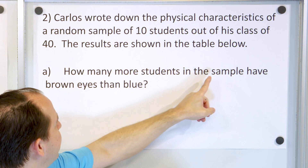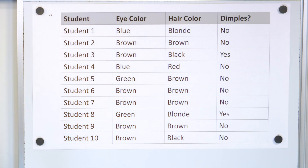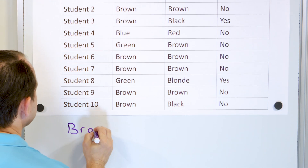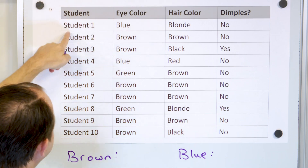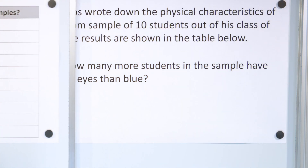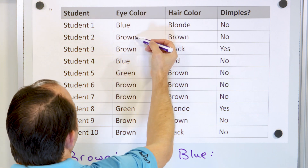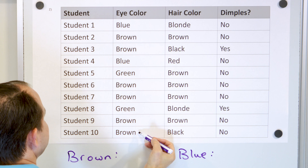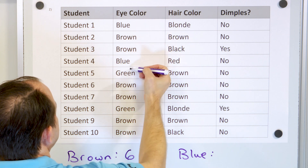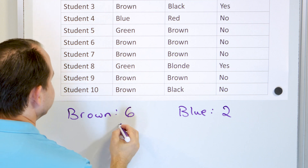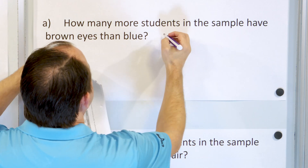Problem one: how many more students in the sample have brown eyes than blue eyes? Going down the eye color column, there are six students with brown eyes. There are two students with blue eyes. Six minus two is four. So there are four more students with brown eyes than blue eyes in the sample.